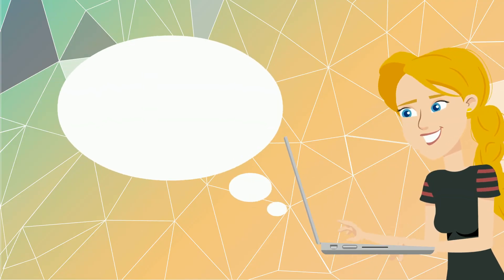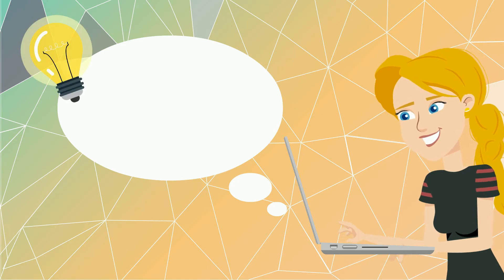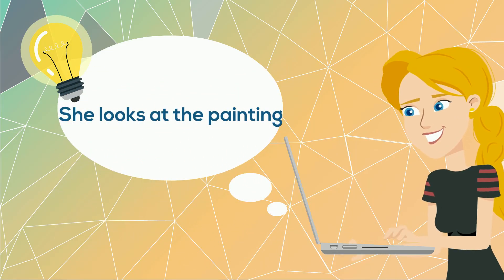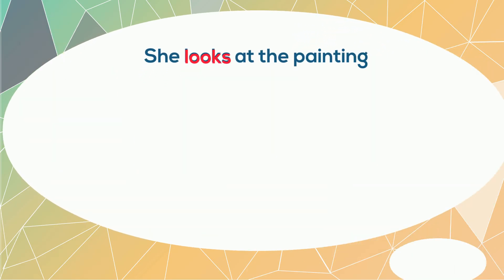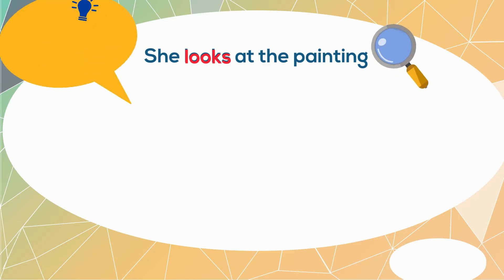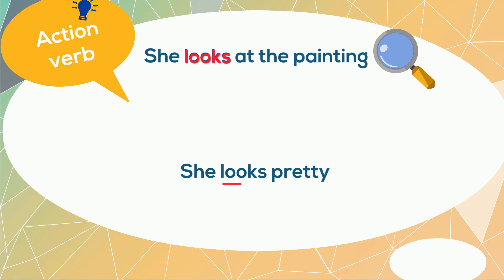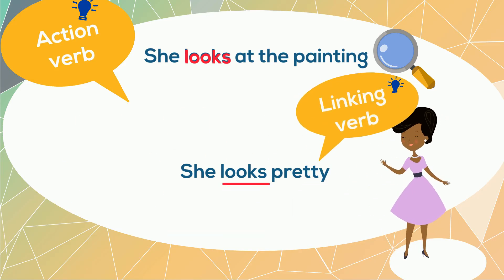Let's look at the following example to see whether the verb is an action or linking verb. "She looks at the painting." The verb here is "looks." It describes an action, so it is an action verb. "She looks pretty." Here, "looks" describes a state of being, so it is a linking verb.